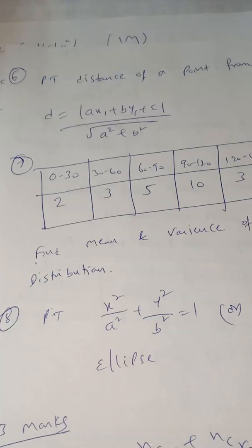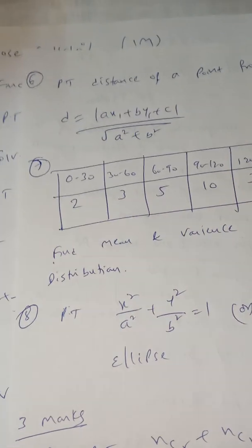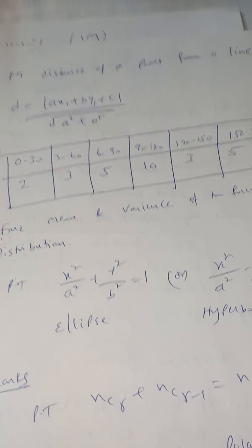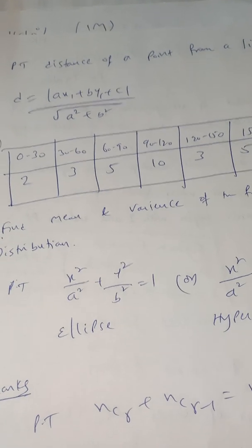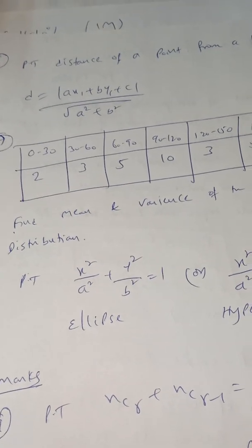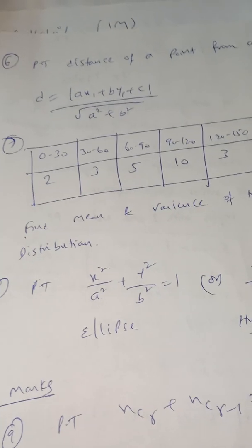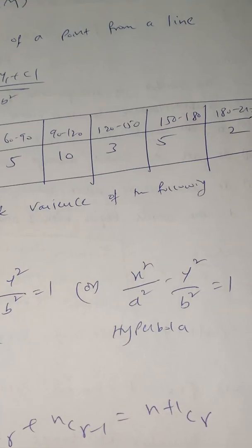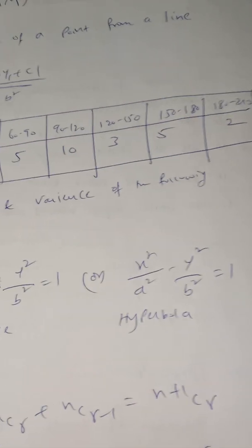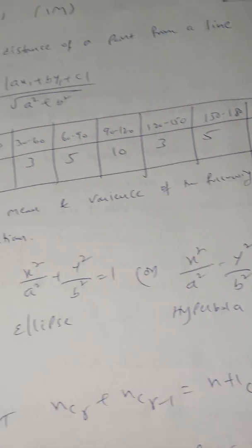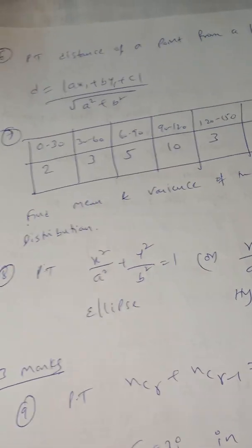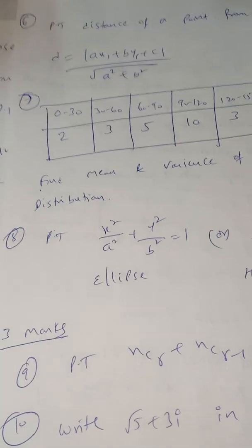For 6 marks, out of two questions — x²/a² + y²/b² = 1 (ellipse proof) or x²/a² − y²/b² = 1 (hyperbola proof) — one question will appear in the final examination of 1st PUC.